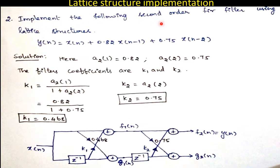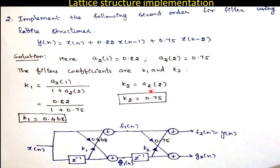This example shows how to implement lattice structure for a second order filter. Given y(n) = x(n) + 0.82·x(n-1) + 0.75·x(n-2), decode the values: 0.75 is associated with x(n-2), so it is a2(2), and 0.82 is associated with x(n-1), so it is a2(1). Directly assign 0.75 to k2. For k1, apply the formula: k1 = a2(1) / (1 + a2(2)) = 0.82 / 1.75 = 0.468.